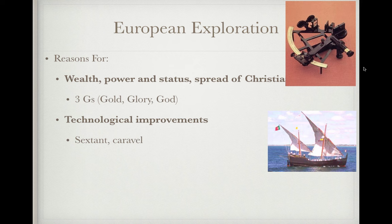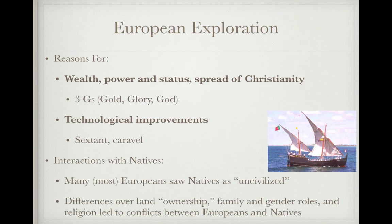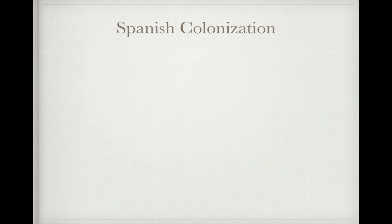Technological improvements allowed Europeans to explore — things like the sextant, which was like a GPS for ships and allowed them to determine exact location, and also the caravel ship, developed by the Portuguese, which traveled much faster. During this time, most Europeans saw natives as uncivilized, using terms like 'savages' and 'barbaric.' There were differences over land ownership, family and gender roles, and religion that led to conflicts and misunderstandings between Europeans and natives.